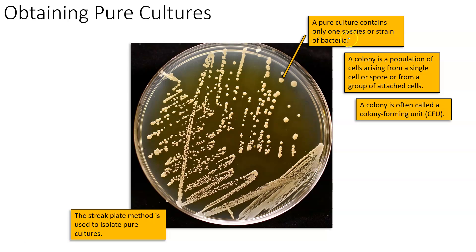A pure culture contains only one species or strain of bacteria. So if you are taking bacteria from a single circular colony, you can be certain that it is a population of cells that arose from a single cell or at least from a group of attached bacteria that probably originally grew from a single pure bacterium as well.